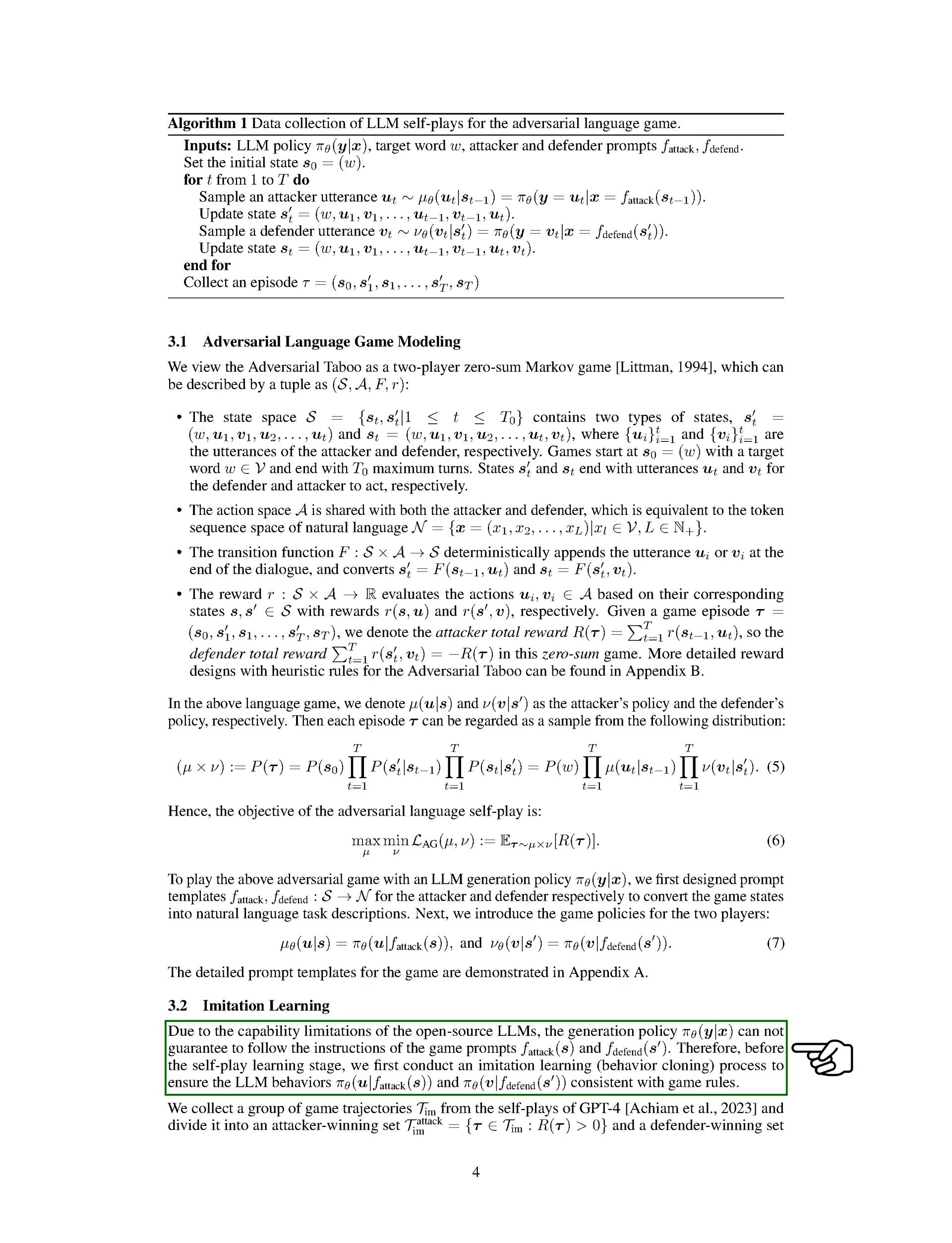Imitation Learning. In this section, we need to ensure that our language model follows the game rules correctly. Before we start the self-play learning phase, we use imitation learning to train the LLM to behave according to the game rules.